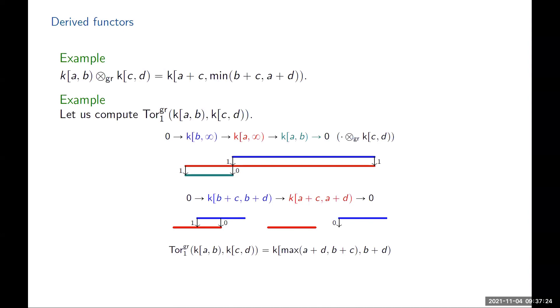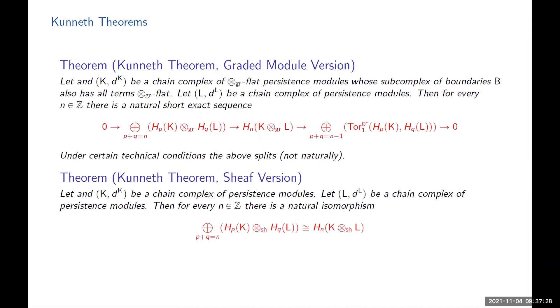Now that we have all these examples and we computed all these formulas, we can state the theorems. For the two different tensor products, you have two different Künneth theorems. These statements are pretty technical, but let me just come back to the torus example.